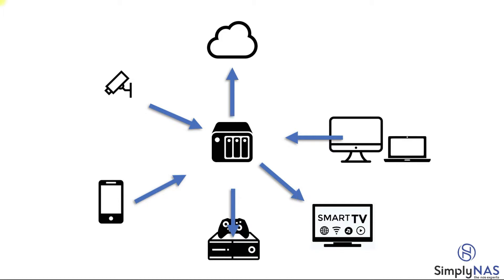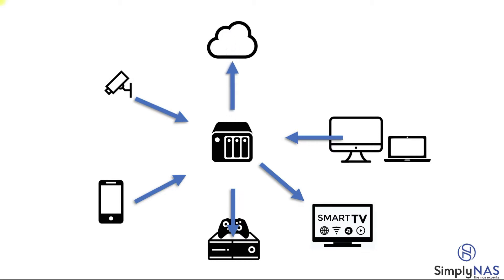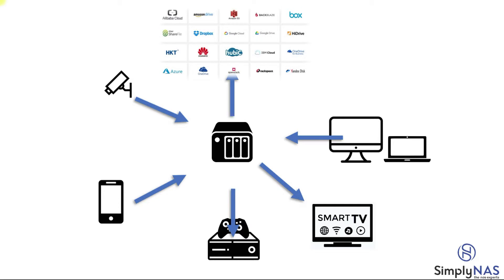You can also back up all of those gigs of video and image files from your phone onto a NAS system. A NAS system is also used for streaming surveillance video, and you can record surveillance video onto your NAS system. A NAS system also connects to the cloud, and you can use all of these cloud providers with your NAS system.